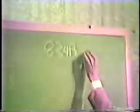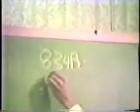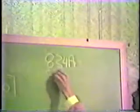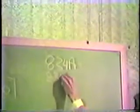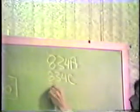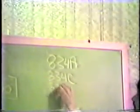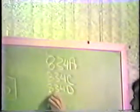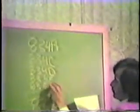Don't worry about this just yet. 8, 3, 4, C — what we want here — it's a block, 4D. And 8, 3, 4, P, and 8, 3, 5, 0.